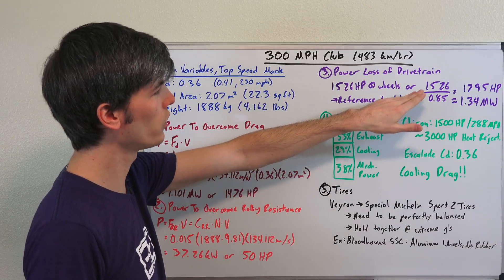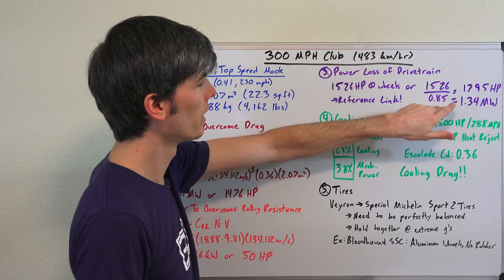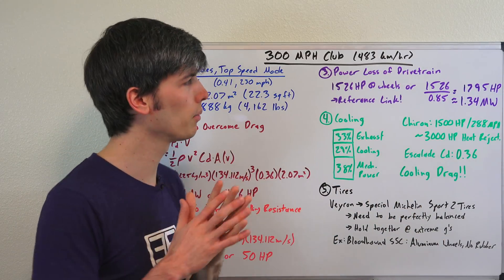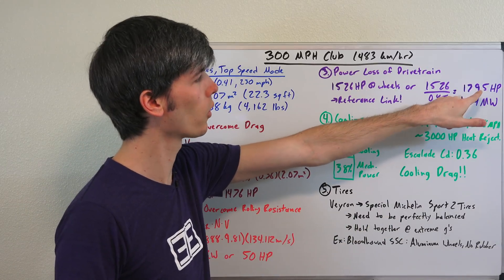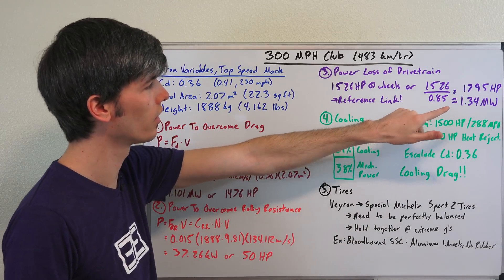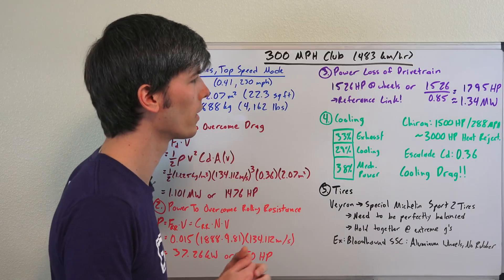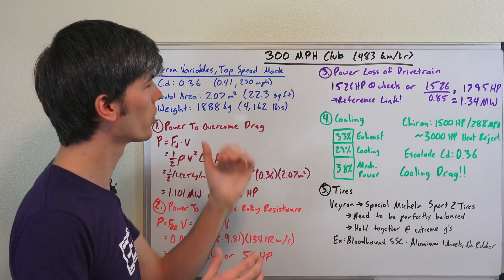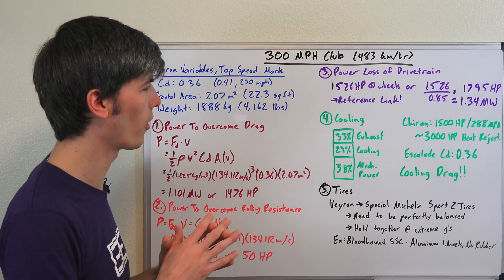And so if you take 1526 divided by 0.85 assuming a 15% power loss, that's going to give us about 1800 horsepower, which we're going to need at the engine or 1.34 megawatts at the engine in order to reach 300 miles per hour.